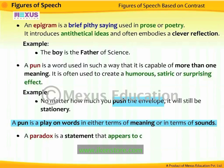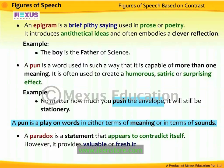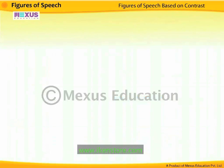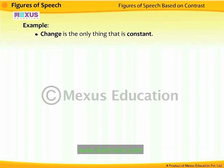A paradox is a statement that appears to contradict itself. However, it provides a valuable or fresh insight into an idea or concept by the seeming use of contradiction. For example, 'change is the only thing that is constant.' This statement is a paradox because the quality of being constant is assigned to the concept of change.